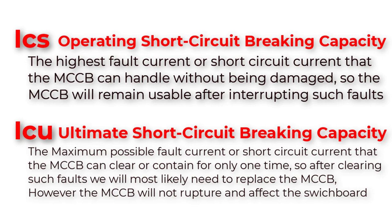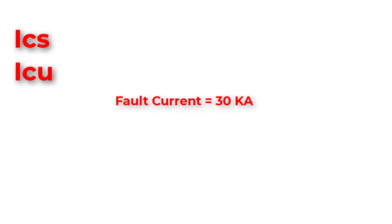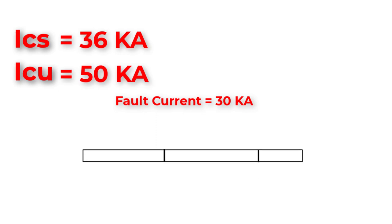We have to be extra careful during calculating and designing the short circuit analysis in the circuit. For example, assume that we have a fault current equal to 30 kilo-amperes, and our MCCB has ICS equal to 36 kilo-amperes and ICU equal to 50 kilo-amperes. At normal conditions, nothing will happen. If a huge fault causes the circuit to draw a fault current equal to 30 kilo-amperes — which is below ICS — the breaker will trip the fault instantaneously without any damage, and we will use this MCCB in the future without any replacements.